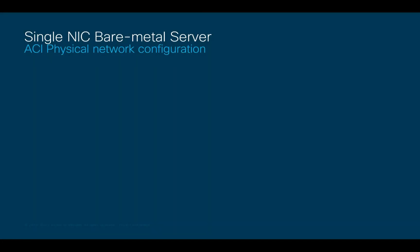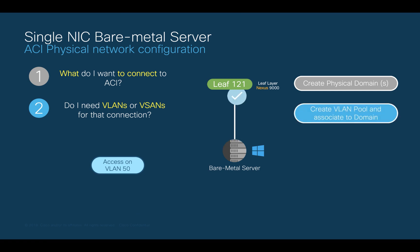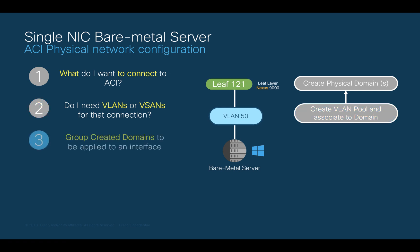The very first question is: what do I want to connect to ACI? The answer is simple — I want to connect a Windows Bare Metal Server. Therefore, I will need to create a physical domain. The next question is: do I need VLANs or VSANs for this connection? The answer is yes — I need at least one access VLAN. I will use VLAN 50 in this case. We will now need to group the domains we created in Step 1 and the VLANs we will use in something we call an AEP.